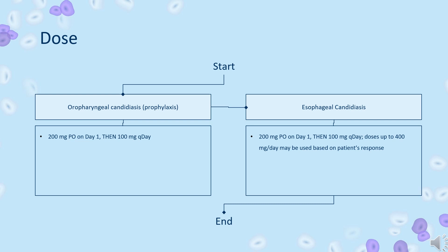Vaginal candidiasis. Uncomplicated: 150 mg PO as a single dose. Complicated: 150 mg PO every 72 hours for 3 doses. Recurrent: 150 mg PO once daily for 10–14 days, followed by 150 mg once weekly for 6 months.